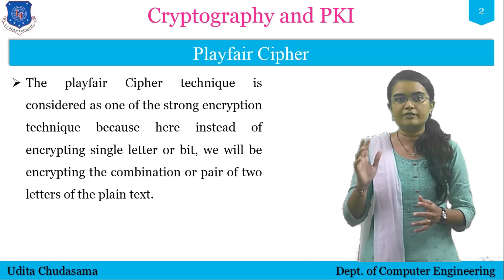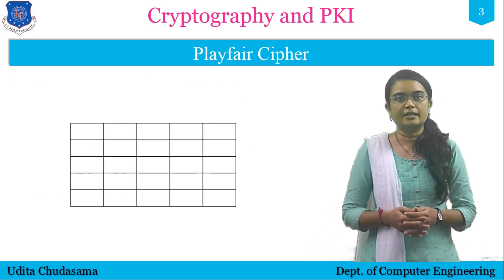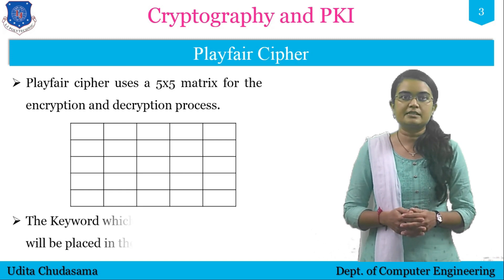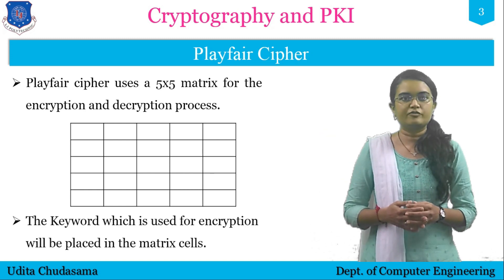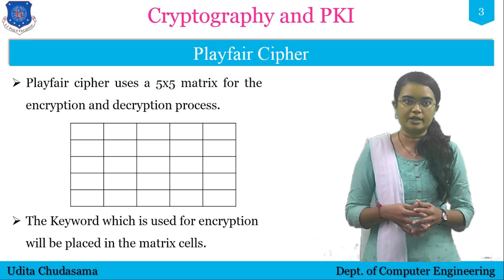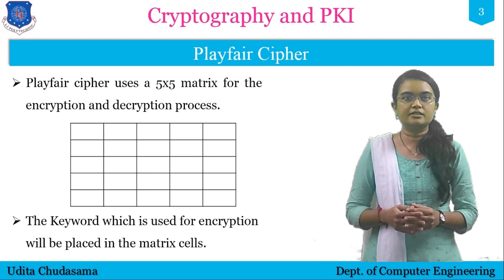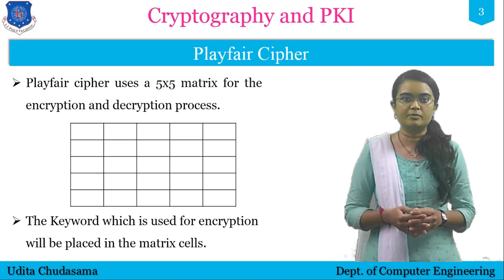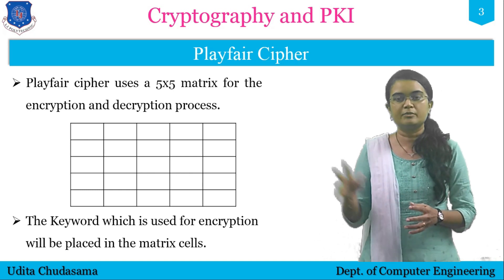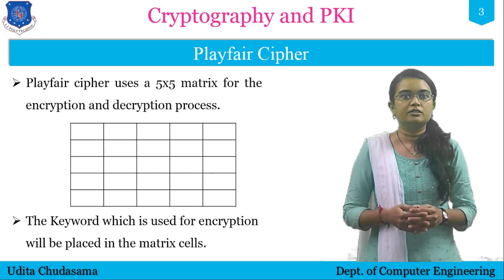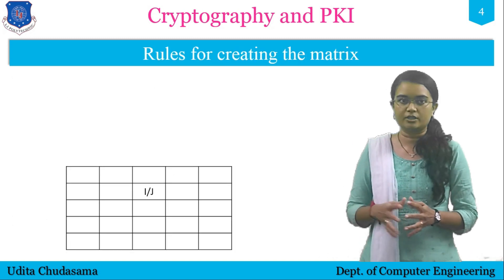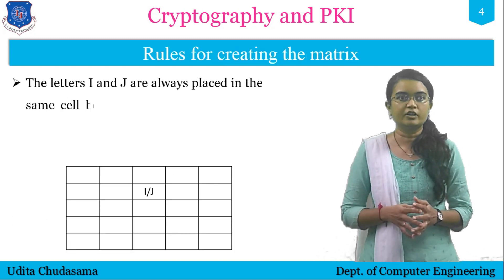Playfair Cipher uses a five by five matrix for the encryption and decryption process, as you can see in the image. The keyword used for encryption will be placed in this matrix cells. The matrix of five by five will be used for placing the keyword characters from left to right, row by row. Once the letters of the keyword are completed, the remaining letters of the alphabet not included in the key will fill the remaining cells. Importantly, letters I and J are always placed together in one single cell.